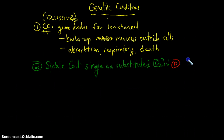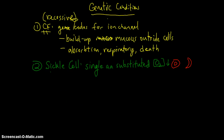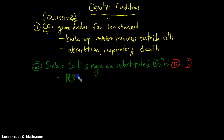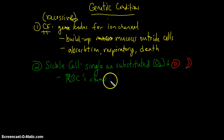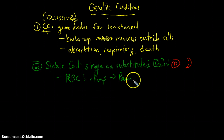Red blood cells are sort of like donuts. But with the sickling of the cell you get a shape that causes a decrease in the ability of the red blood cells to carry and deliver oxygen. As a result, the red blood cells tend to clump together when blood vessels narrow. This clumping can lead to pain and discomfort, potentially swelling, and ultimately a decrease in the oxygen delivery to tissues of the body.